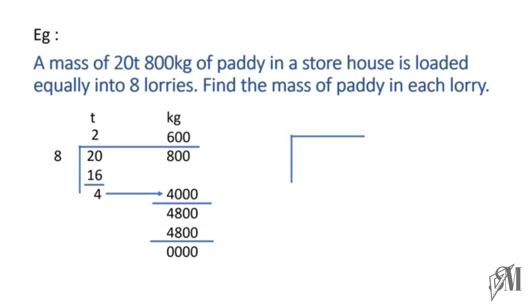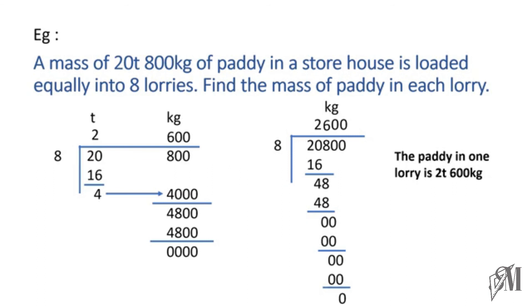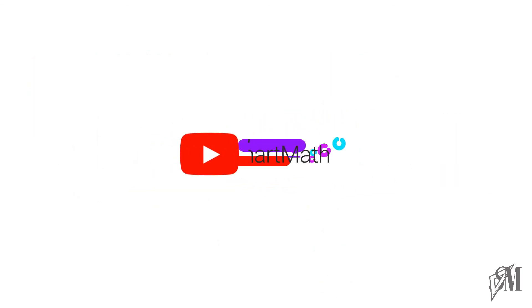The other method is we convert the mass of the paddy into kilograms, so it becomes 20800 kilograms, and we do normal division. When you do 20800 divided by 8, you get the answer as 2600 kilograms. So if you write that in tons and kilograms, it will be the same answer as before — the paddy in one lorry is 2 tons and 600 kilograms.